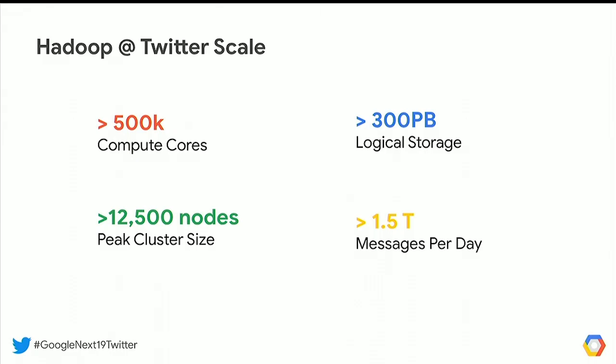That 1.5 trillion messages a day — and even the 300 petabyte number — how do you get there? Surely there's not quite that many tweets per day, and each tweet is only about 280 characters. The actual tweet text itself is a very small percentage. Whenever users visit Twitter.com or use the Twitter mobile app, there are a lot of things they're doing: the interactions, the timeline, the order of tweets they see, who to follow suggestions, the searches they do. All these actions generate events. Our framework is capable of aggregating about 1.5 trillion events every day — that's about 1 billion events every minute.